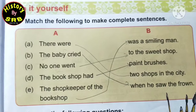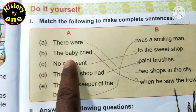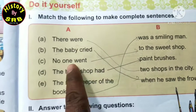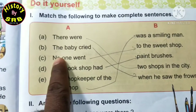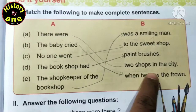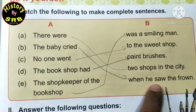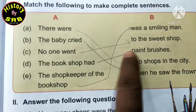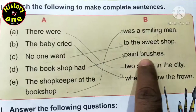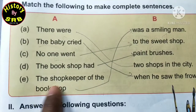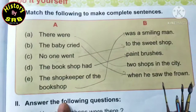Yahan par 'Match the Following to make complete sentences' hai. Do parts hain - Column A aur Column B. Already I have solved this one. So now: A - there were two shops in the city; B - the baby cried when he saw the frown; C - no one went to the sweet shop; D - the bookshop had paint brushes; E - the shopkeeper of the bookshop was a smiling man.